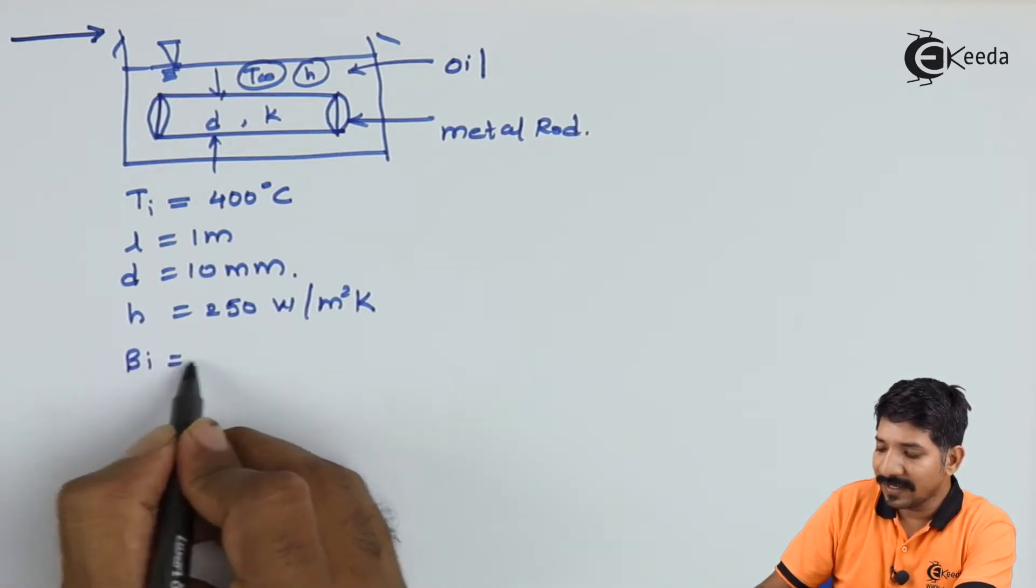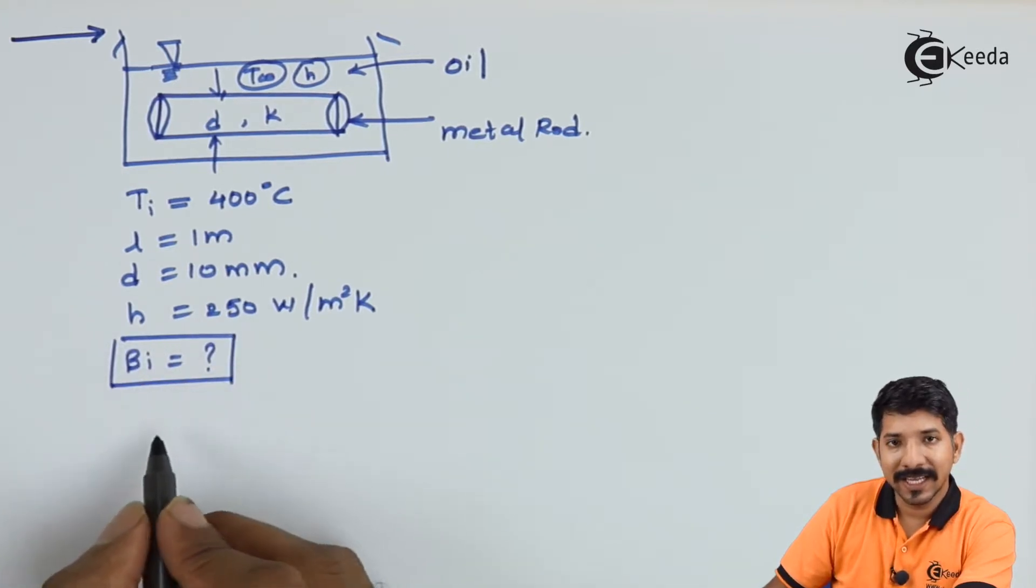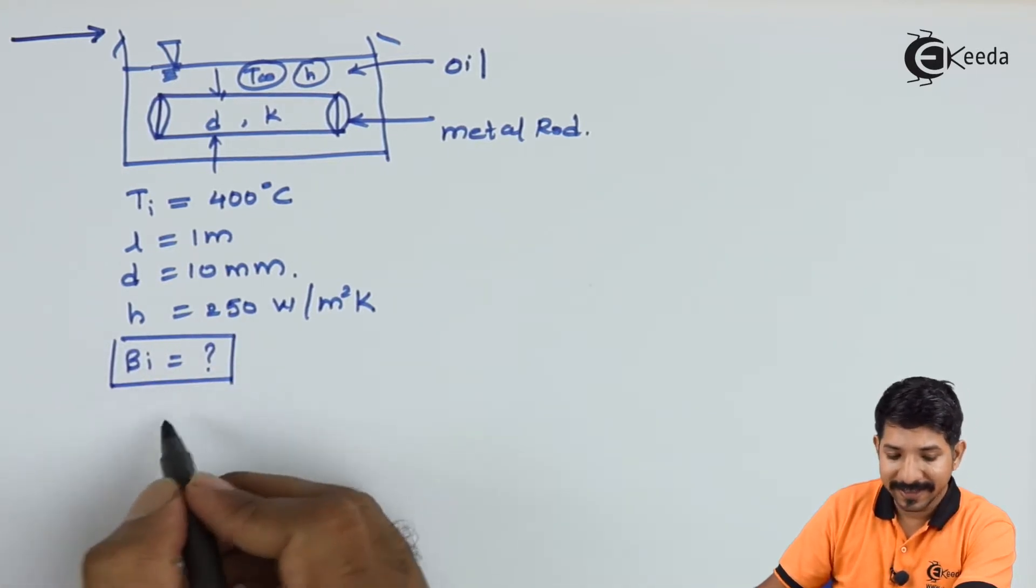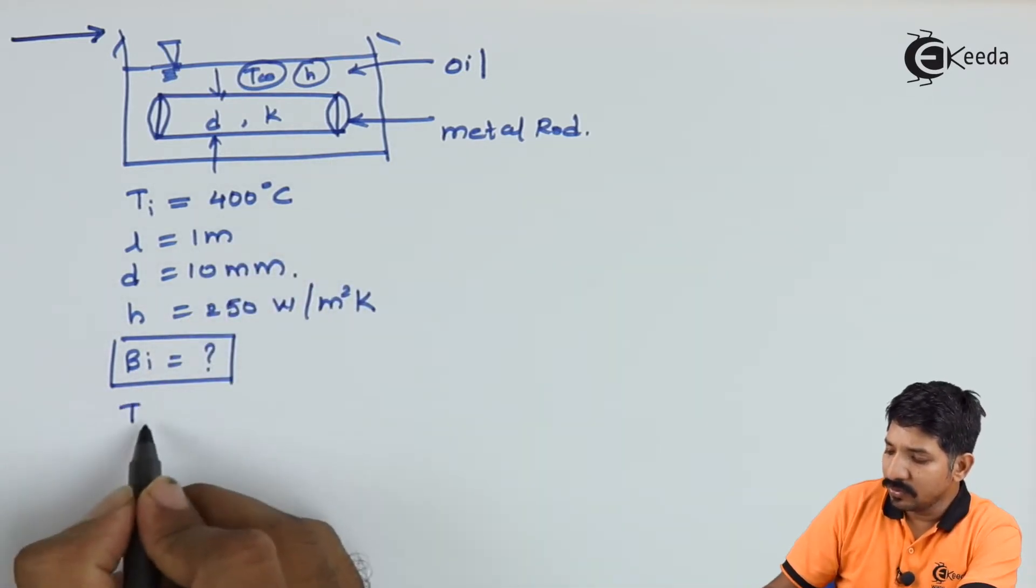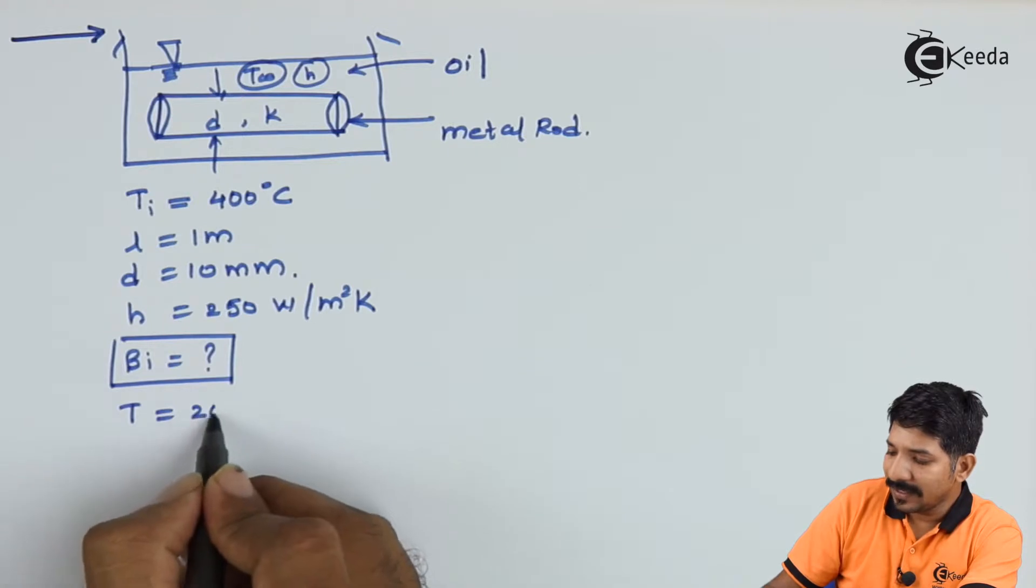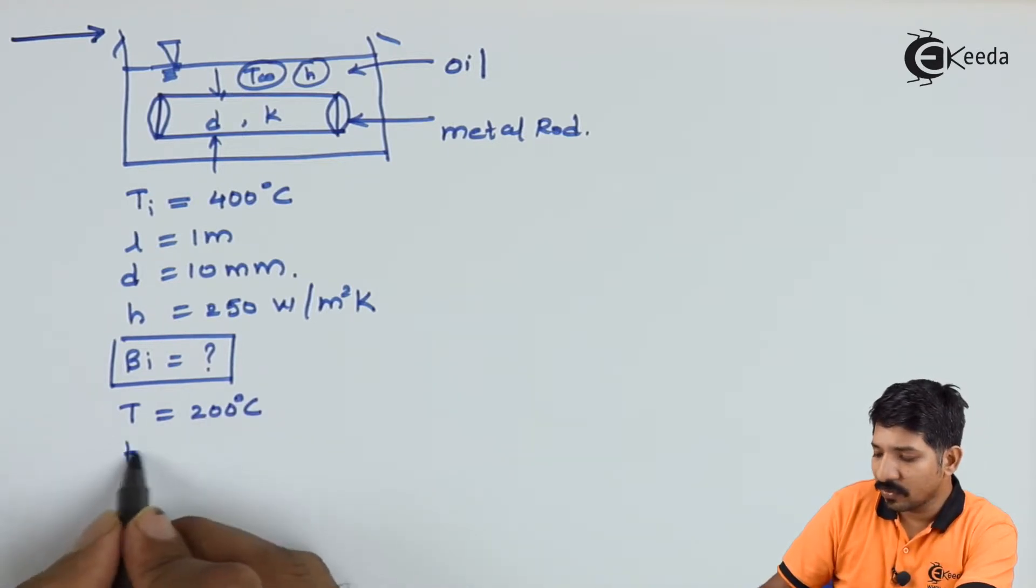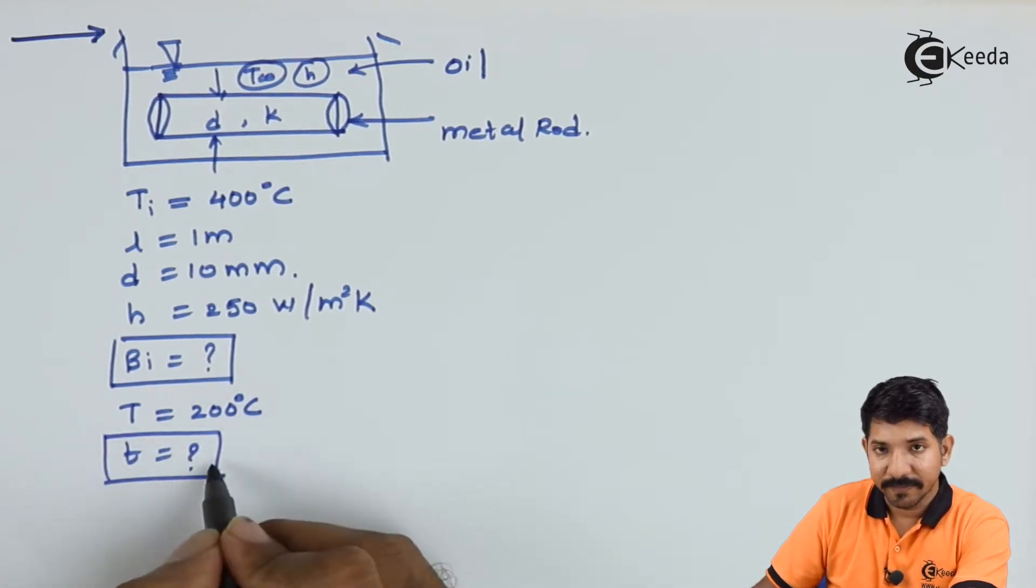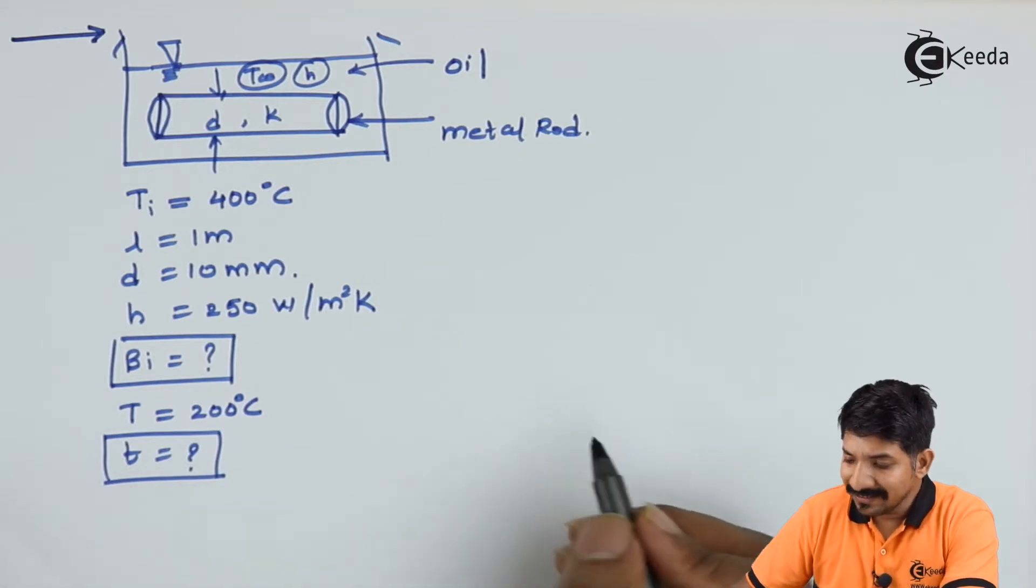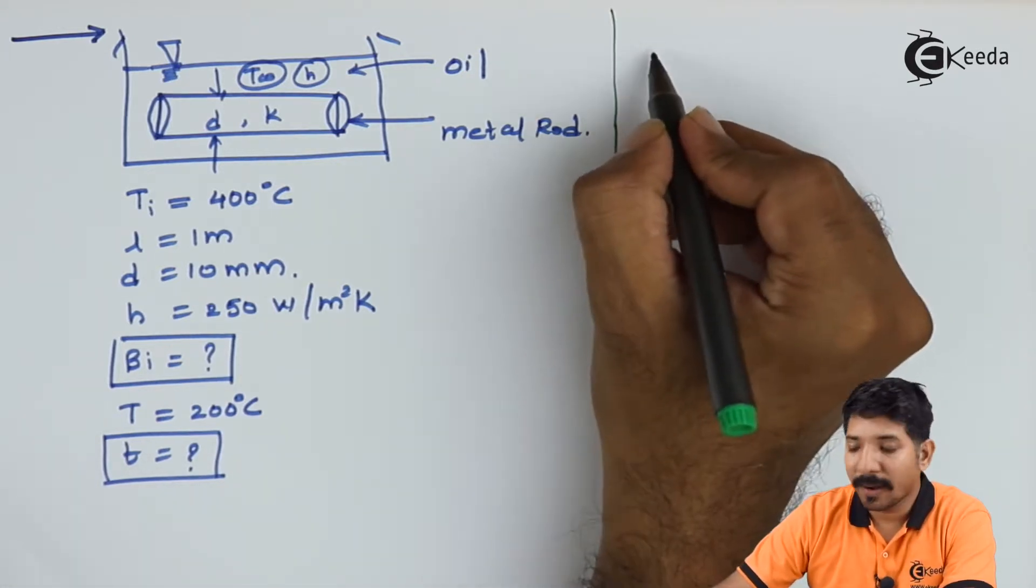That can be found out by finding the value of Biot number. So this is the first thing: find the Biot number. In the second case, if it is cooled to 200 degree Celsius, then what is the time required for this cooling?